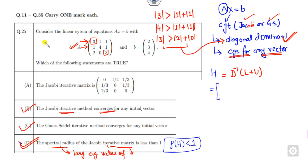Now, how can you find D inverse? D is the diagonal matrix with entries 3, 4, 3, and the rest are 0. The inverse is a diagonal matrix with entries 1/3, 0, 0 in the first row; 0, 1/4, 0 in the second row; and 0, 0, 1/3 in the third row. What is L+U? Apart from the diagonal, the rest are L+U.